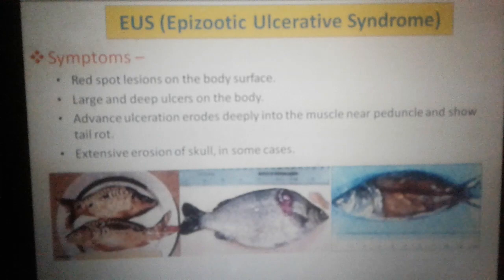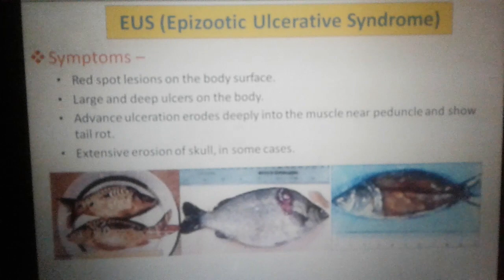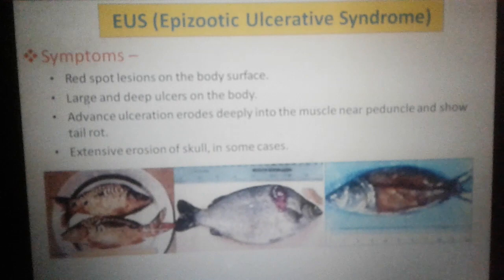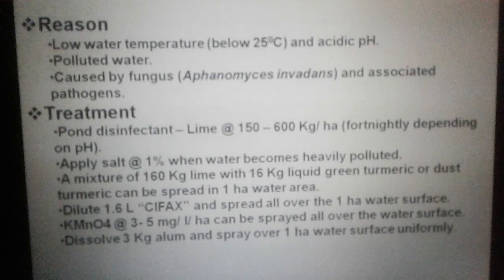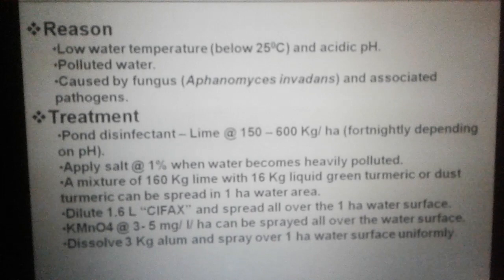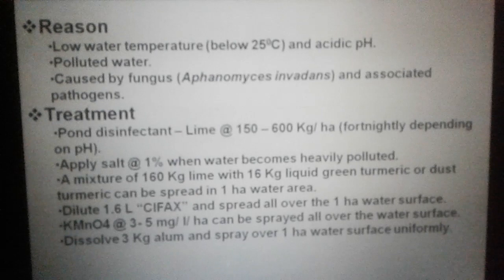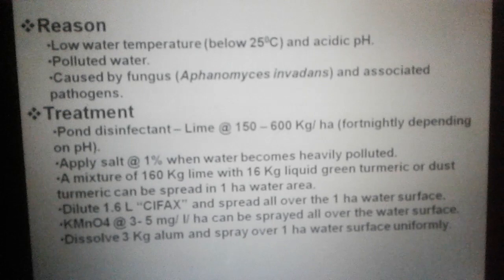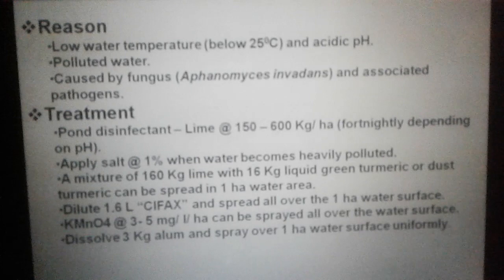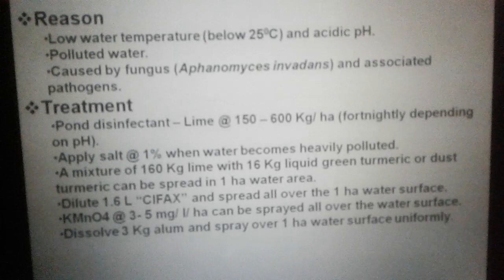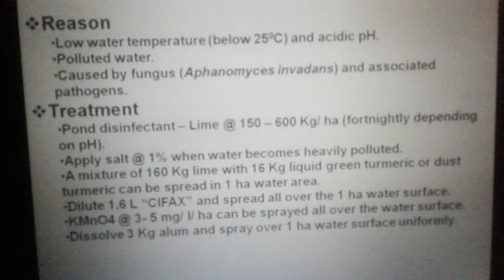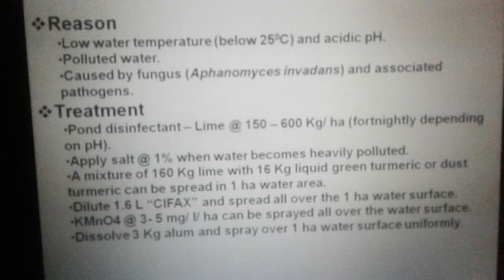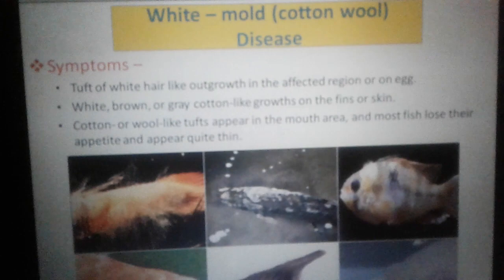Amongst the common diseases, one of the most common is EUS — Epizootic Ulcerative Syndrome. The lesions or spurs appear on the surface and the ulcer can go up to the internal organs. It occurs due to low-temperature polluted water or by the fungus Aphanomyces invadans. Treatment includes lime, salt, or a mixture of lime and liquid green turmeric or turmeric dust. Cifax 1.66 liters per 100 hectare area can also be used, and K-MnO4 is also good for management of this disease.